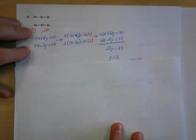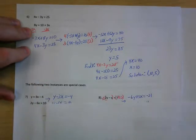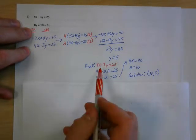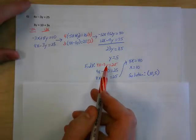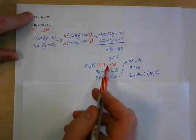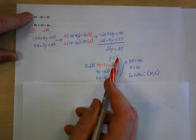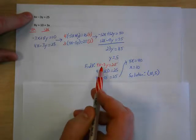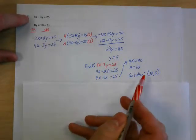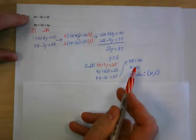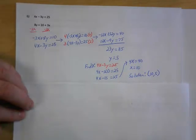Now that we know y equals 5, we use the first equation 4x minus 3y equals 25 and put 5 in place of y. Solve that and you end up with x equals 10, for a solution of (10, 5).